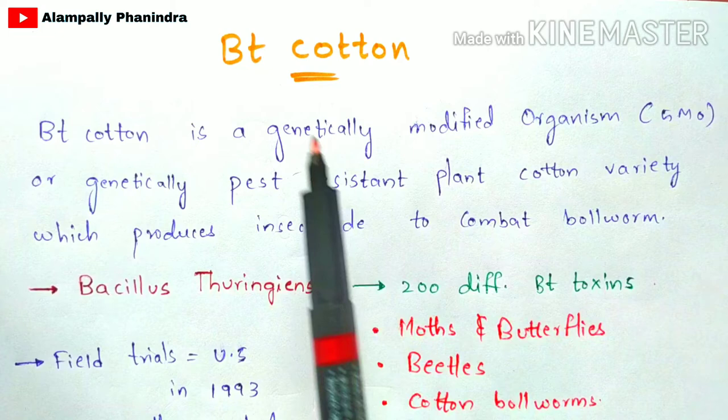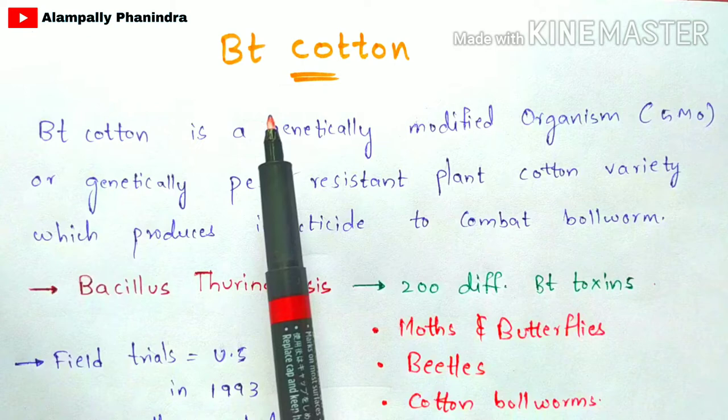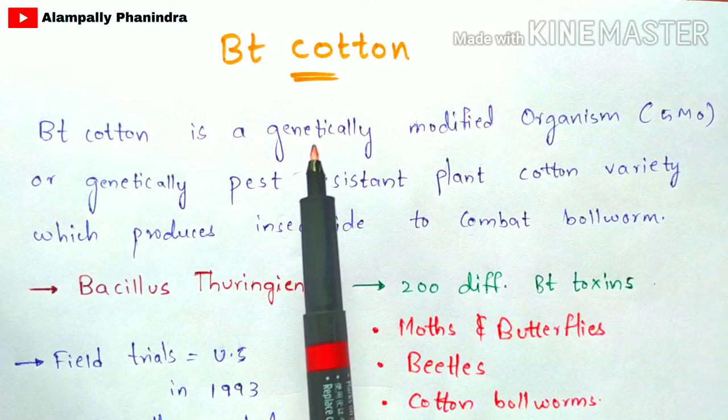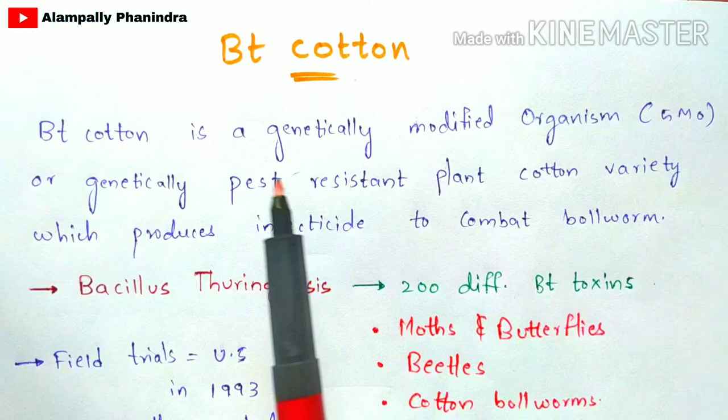These insects destroy the whole field, so to prevent that, BT cotton is mainly produced and cultivated throughout the field. The insect cannot feed on BT cotton, and once an insect feeds on BT cotton, it will lead to death. How BT cotton plants are produced, what the specialty is, and how BT cotton can kill insects will be explained in detail.